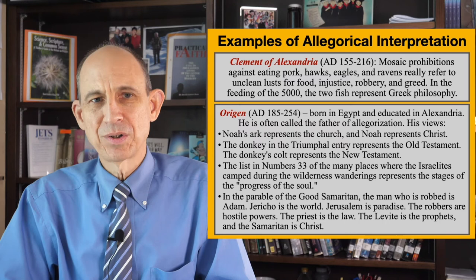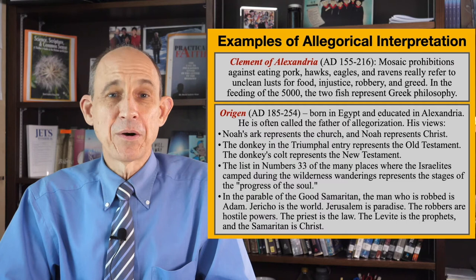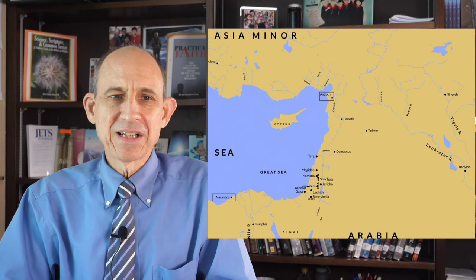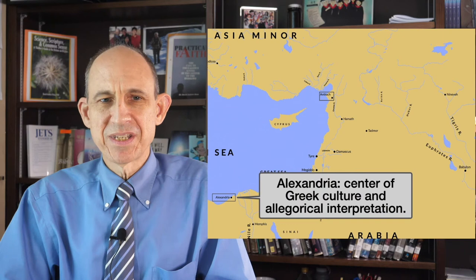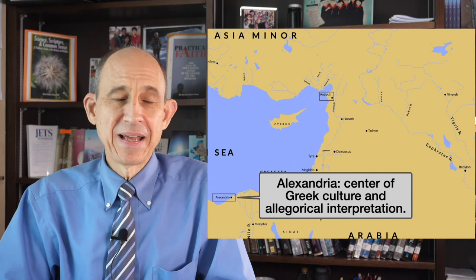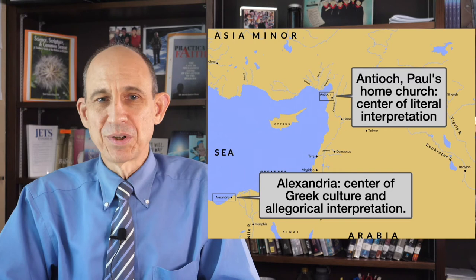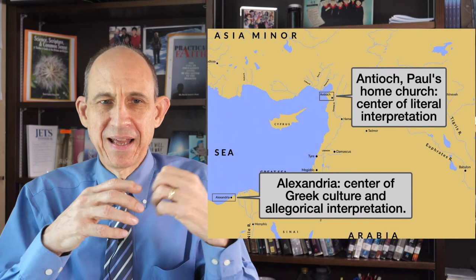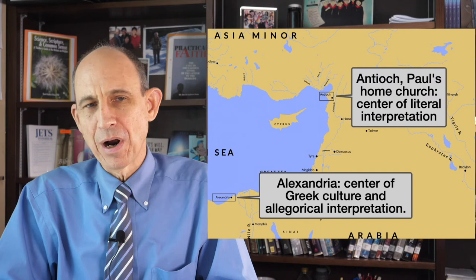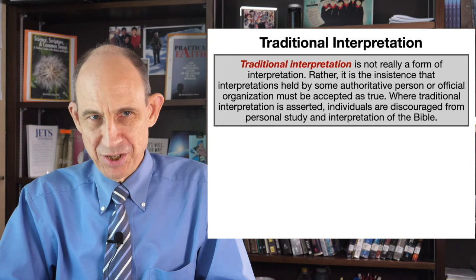Alexandria in Egypt, near the Nile Delta, was the center of Greek culture and allegorical interpretation in the intertestamental period and leading into the time of the early church. Antioch was Paul's home church, and this became the center of literal interpretation. So in the early church we've got a battle going on between allegorical interpretation and literal interpretation — and of course, literal interpretation is the proper way.